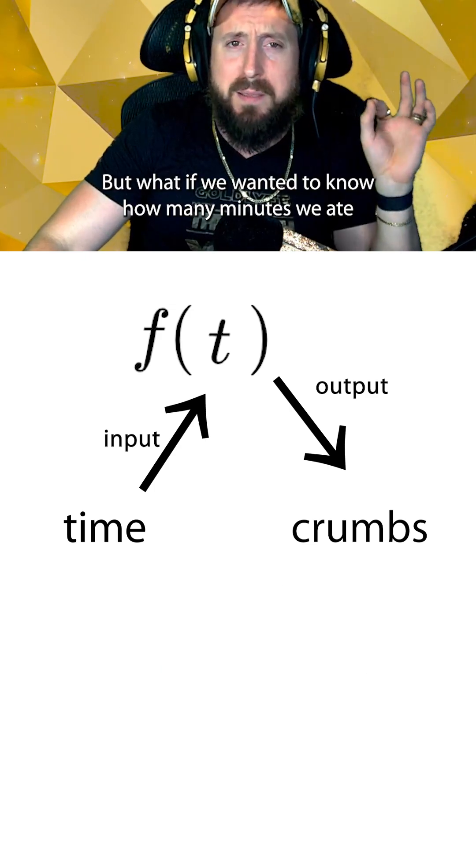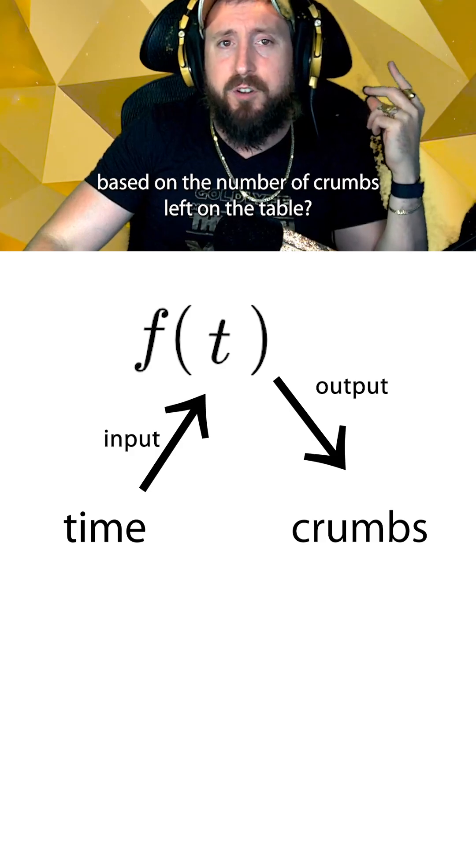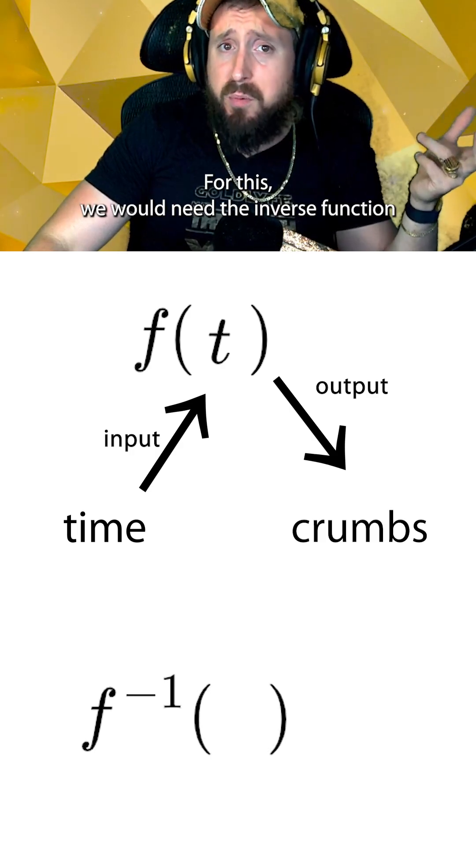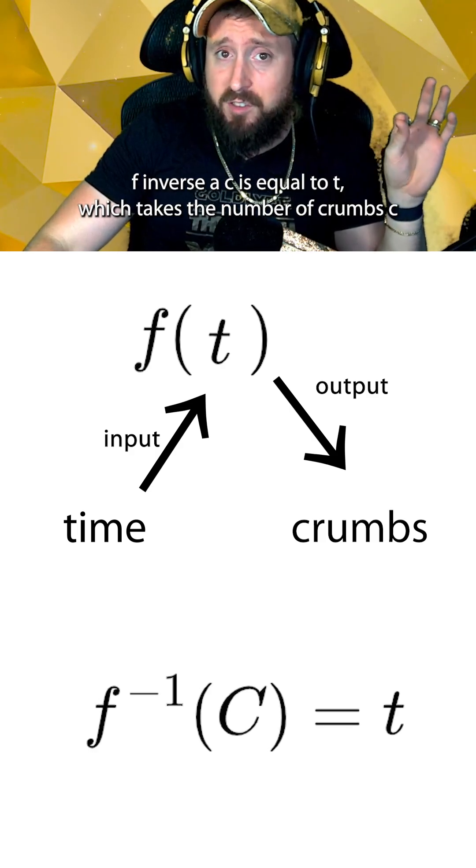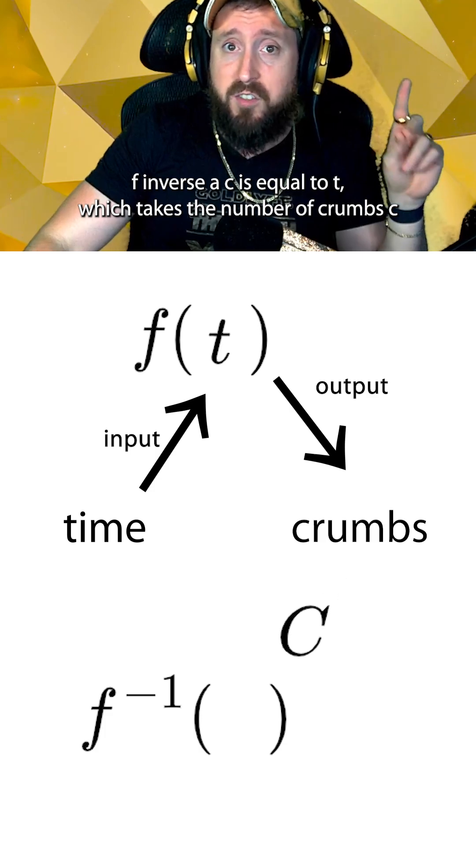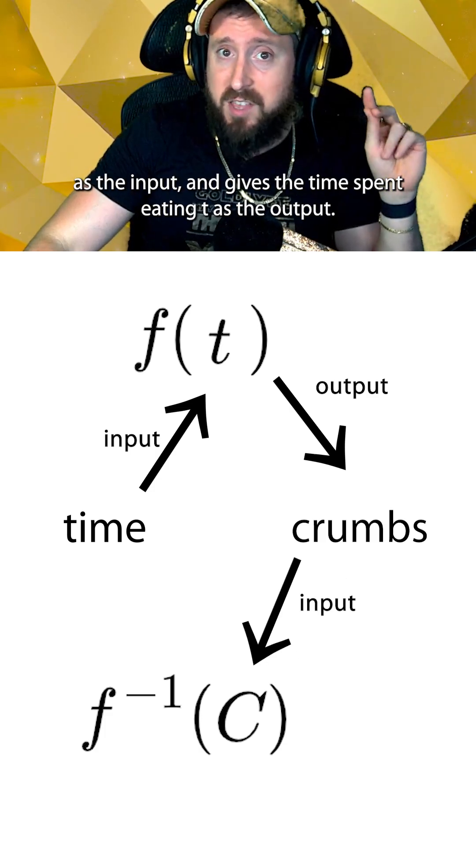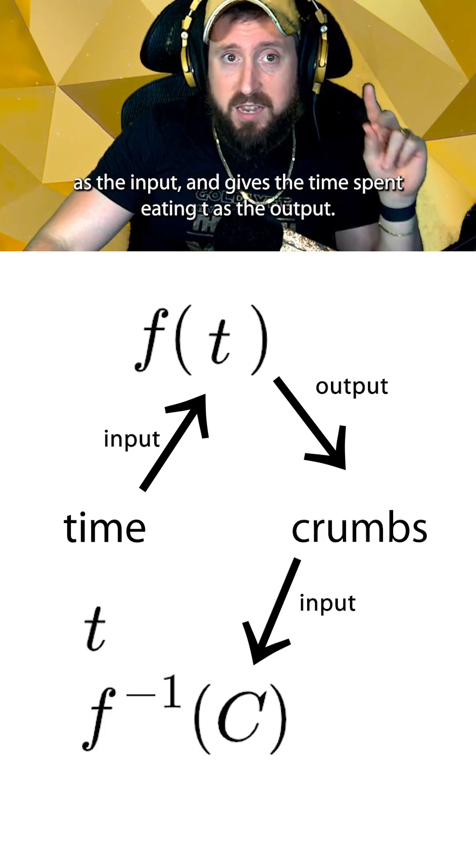But what if we wanted to know how many minutes we ate based on the number of crumbs left on the table? For this we would need the inverse function, f inverse of c is equal to t, which takes the number of crumbs, c, as the input, and gives the time spent eating, t, as the output.